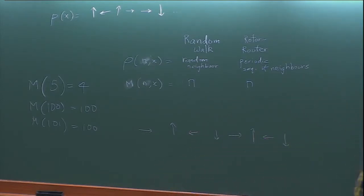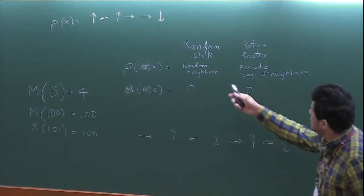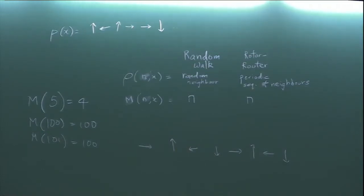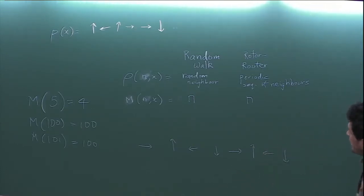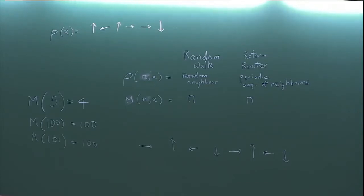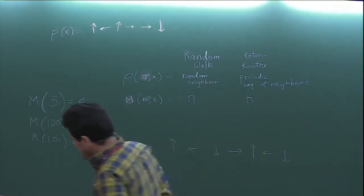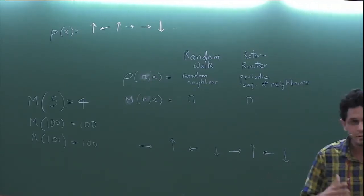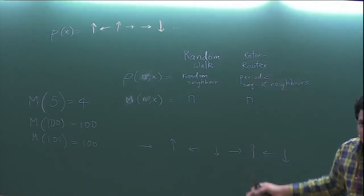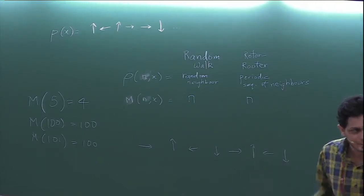This is a very nice model — it shows self-organized critical behavior, and its relationship to the random walk has been studied by many people, including Lionel and James Propp and their collaborators. But the SOC part was studied 20 years ago, and since then not a lot of progress has been made on it. For example, we know that if there's just one walker walking on the lattice, it does Eulerian tours, but what if 10 walkers are walking? We don't know. Also, it shows nice properties like the coupling lemma that Lionel used in the sandpile model — all those things hold for the rotor-router as well.